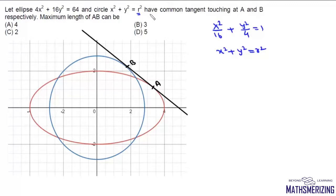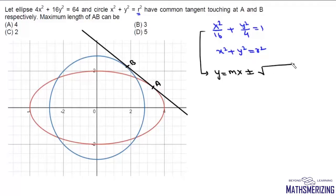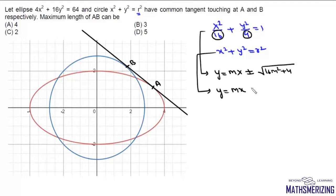We'll write the equation of the tangent to the ellipse in terms of slope. The equation of a tangent to this ellipse can be expressed as y = mx ± √(a²m² + b²). Since a² = 16 and b² = 4, it becomes y = mx ± √(16m² + 4). The equation of tangent to the circle with slope m is y = mx ± r√(1 + m²).